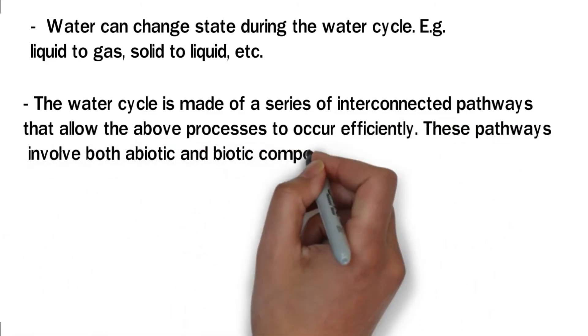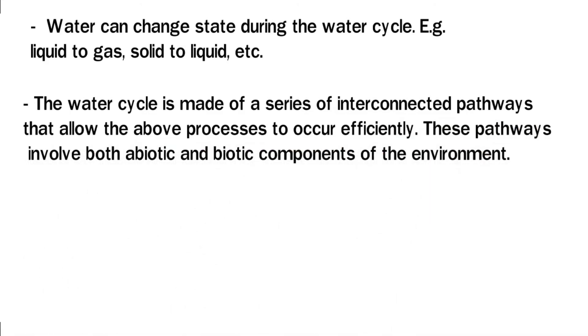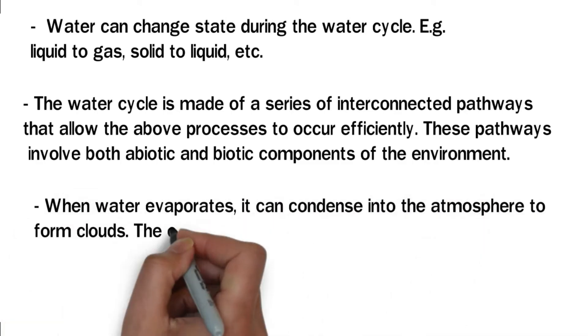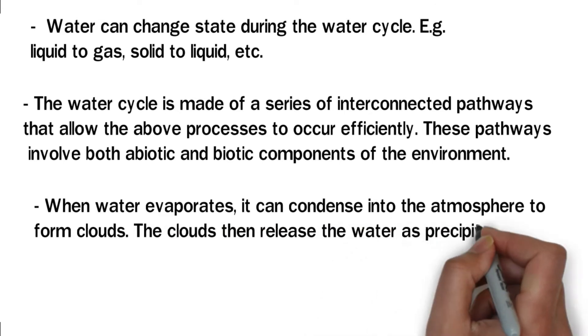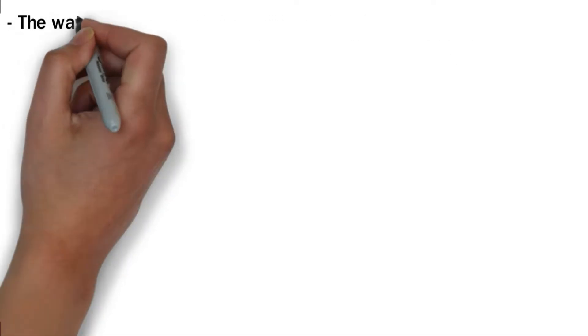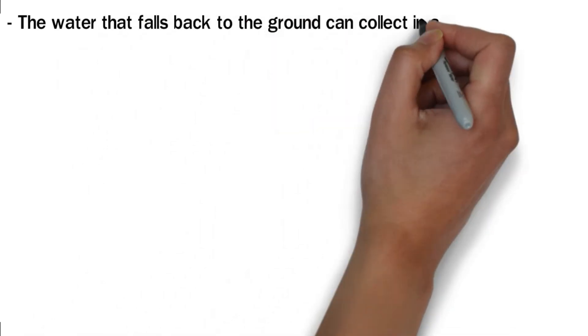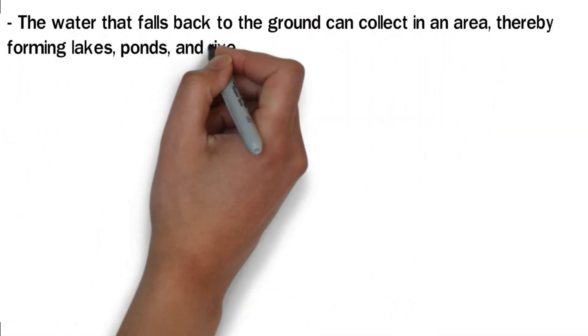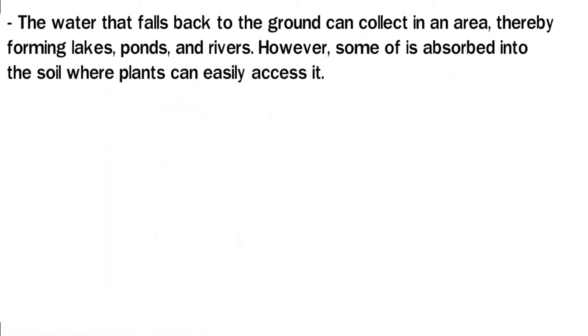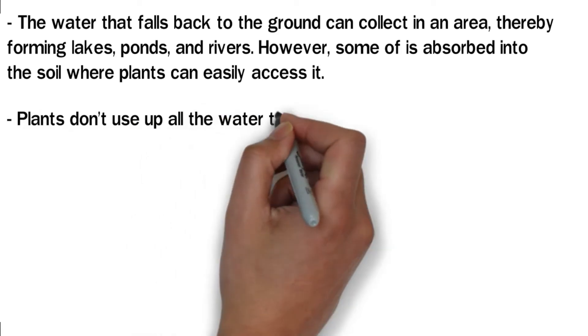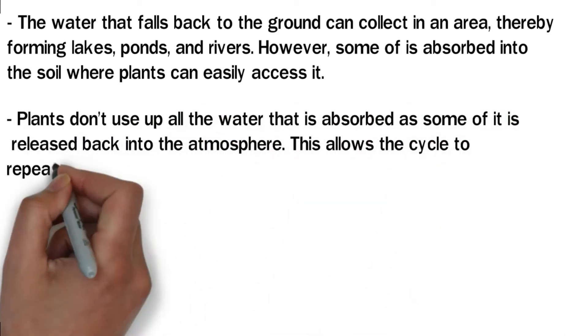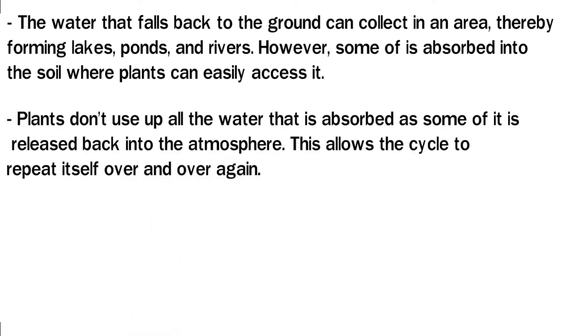These pathways involve both abiotic and biotic components of the environment. When water evaporates, it can condense into the atmosphere to form clouds. The clouds then release the water as precipitation in the form of snow or rain. The water that falls back to the ground can collect in an area, thereby forming lakes, ponds, and rivers. However, some of it is absorbed into the soil where plants can easily access it. Plants don't use up all the water that is absorbed as some of it is released back into the atmosphere. This allows the cycle to repeat itself over and over again.